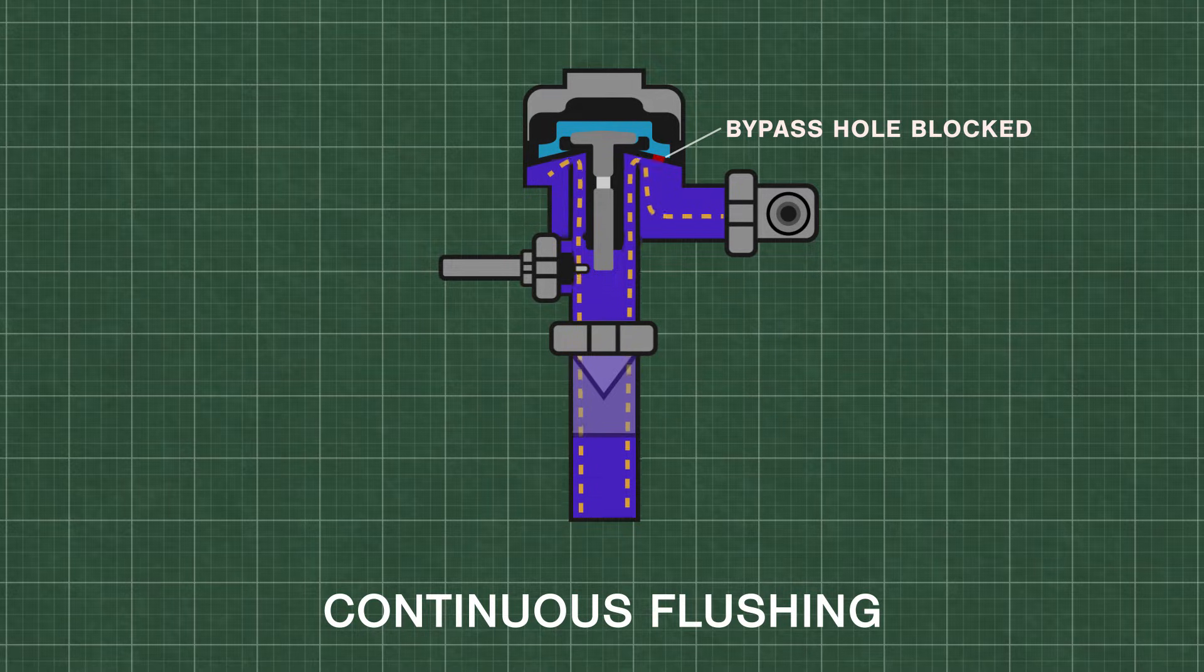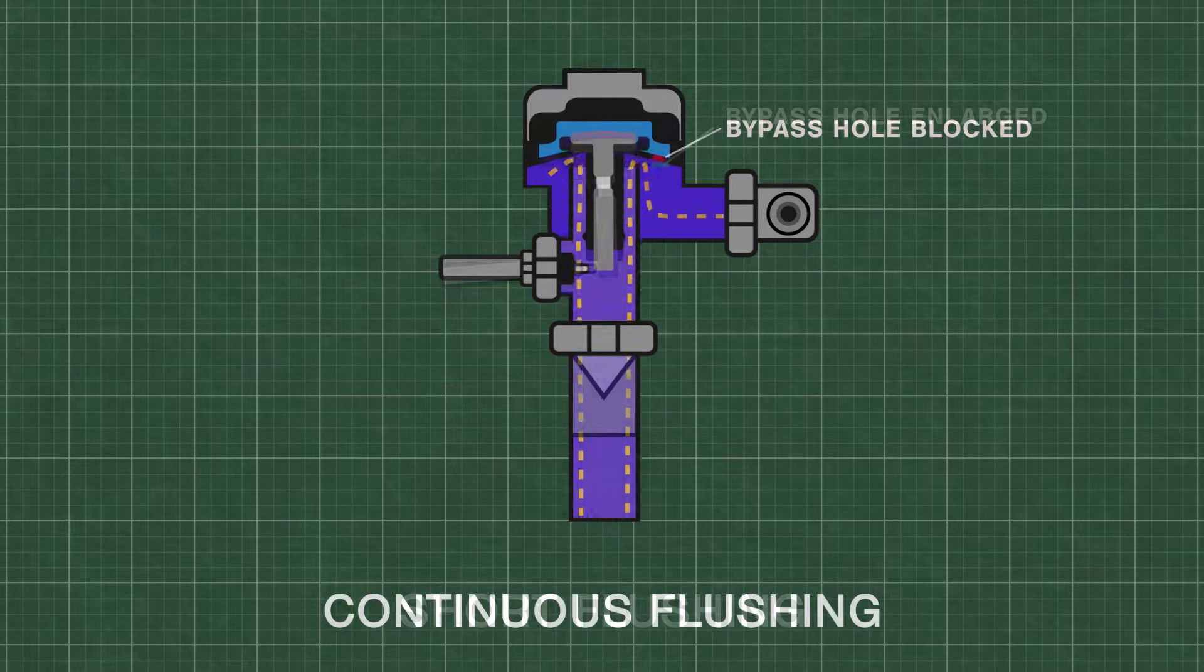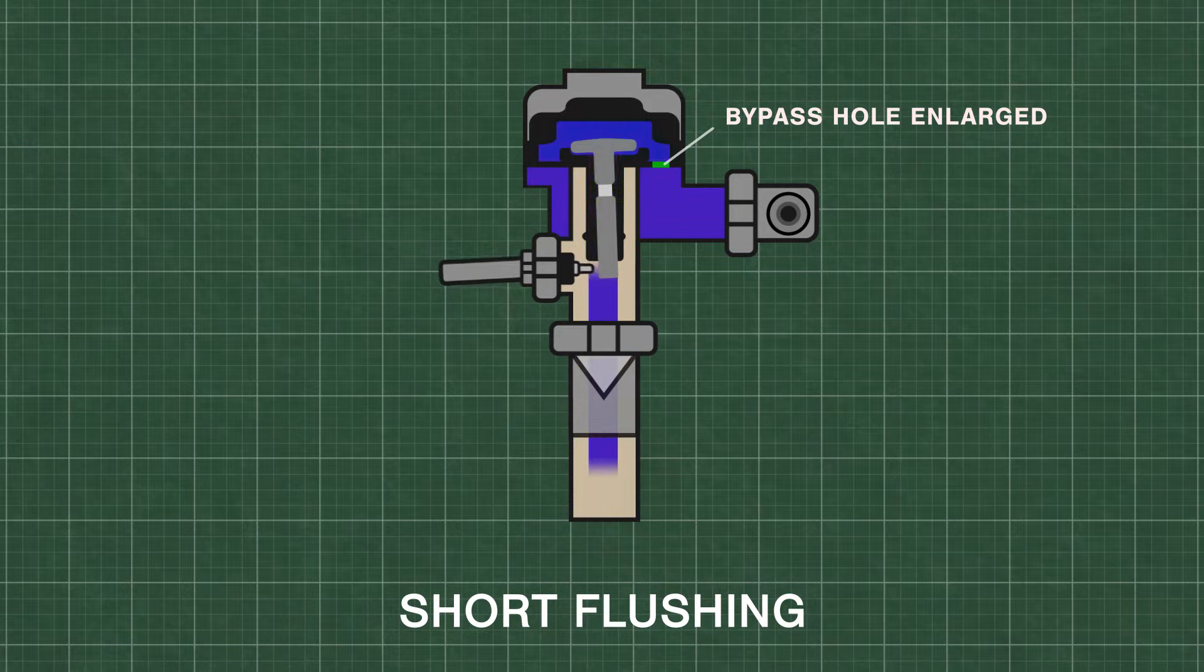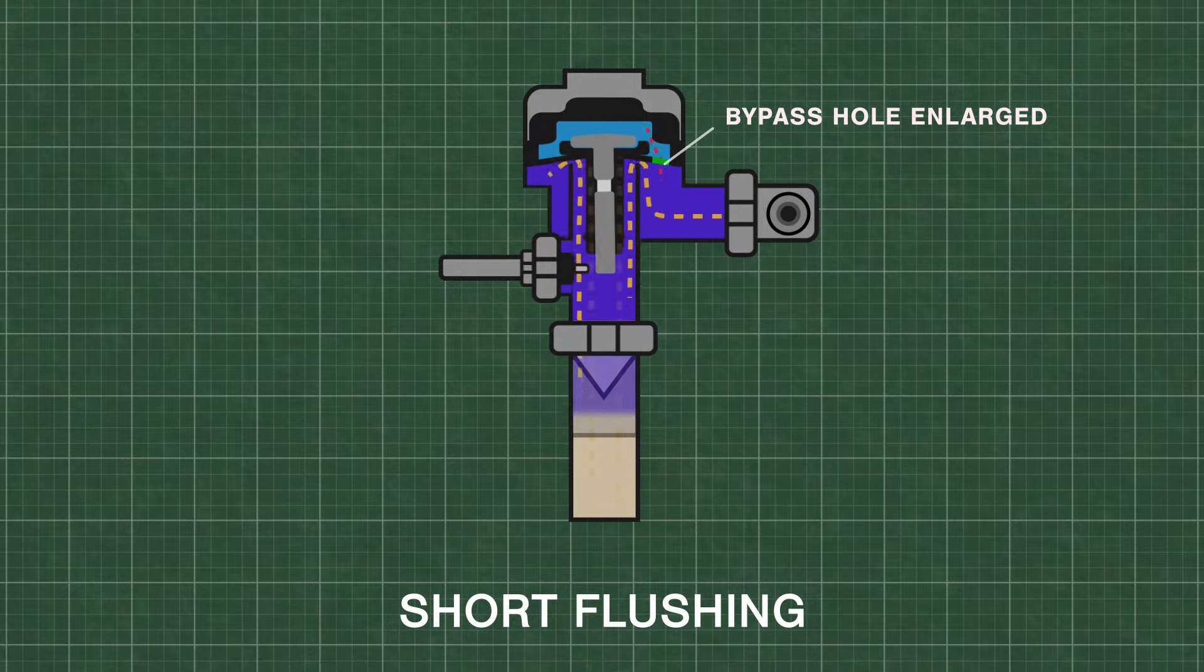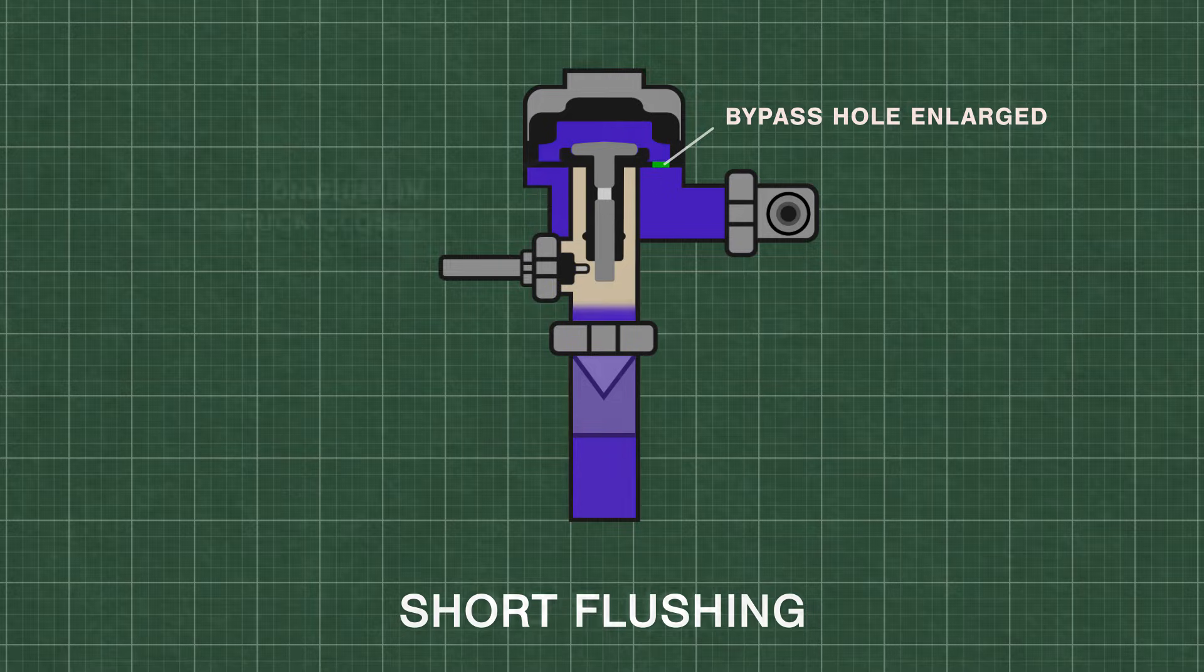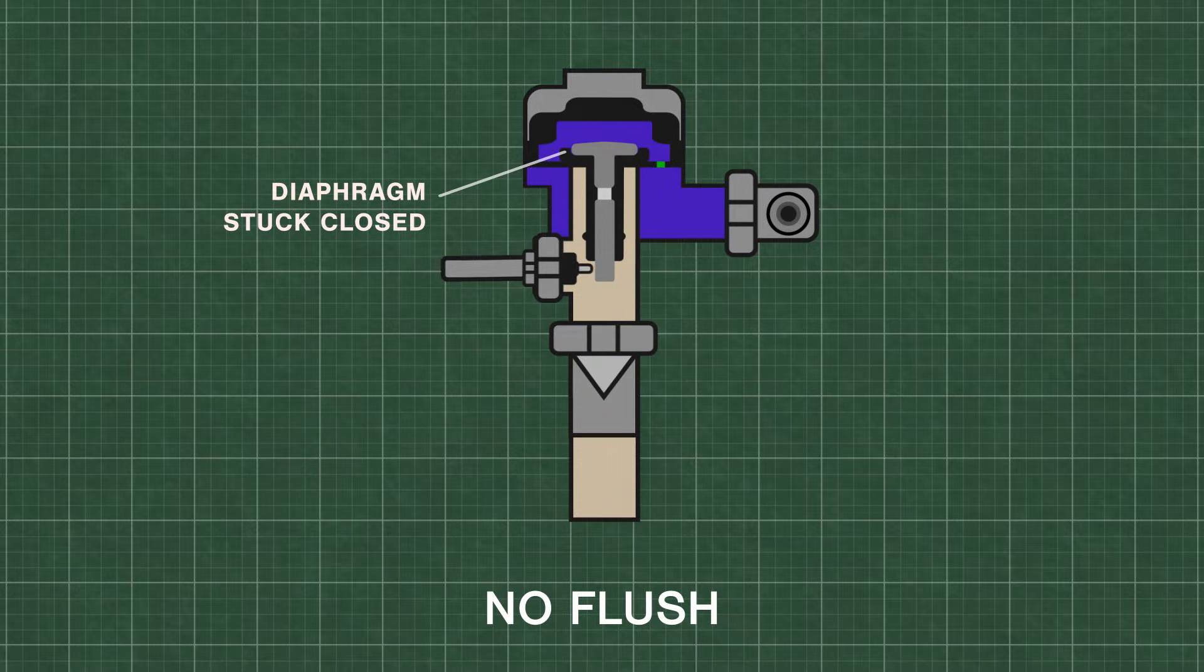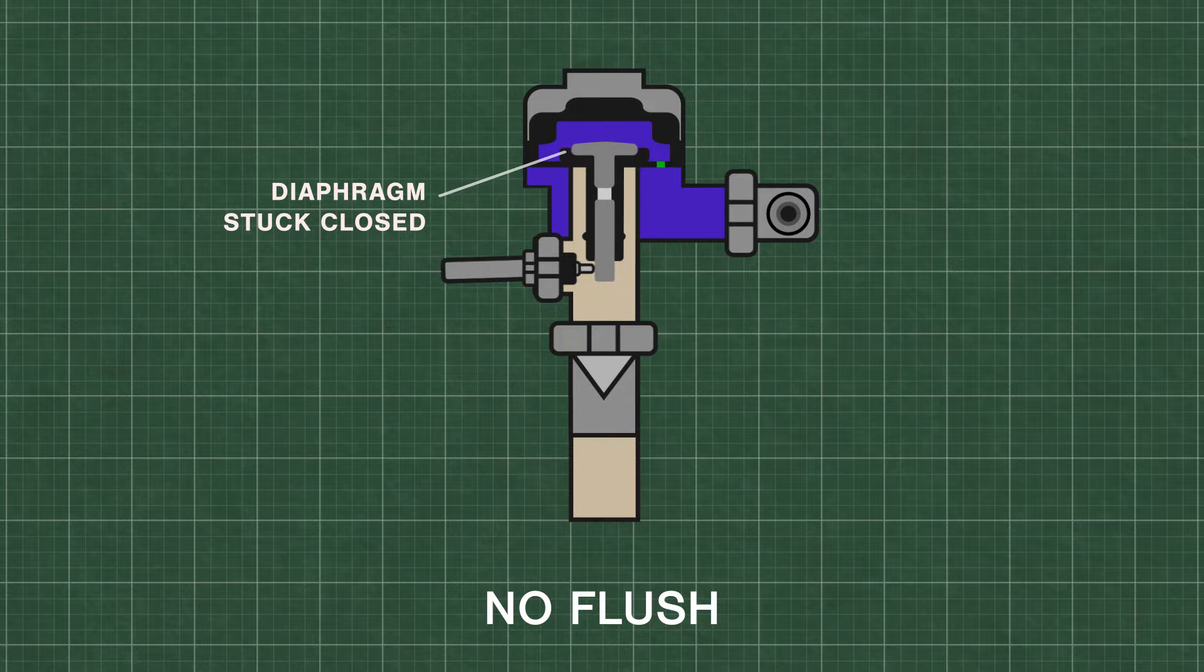Continuous flushing can occur if the bypass hole is blocked. If the bypass hole is enlarged, then the upper chamber will fill with water too quickly. Alternatively, if the diaphragm or relief valve is worn down or sticks to the valve, it can prevent the unit from functioning at all.